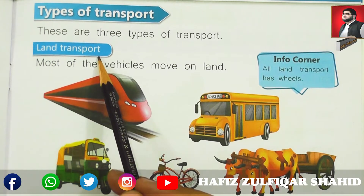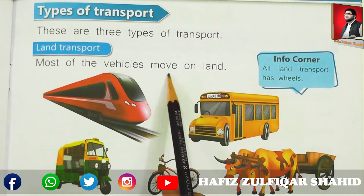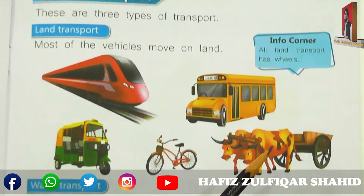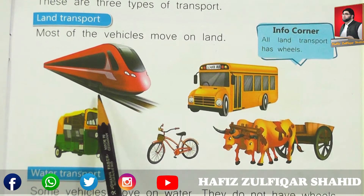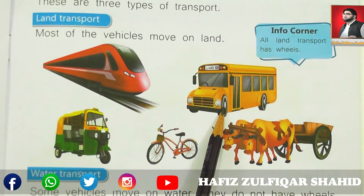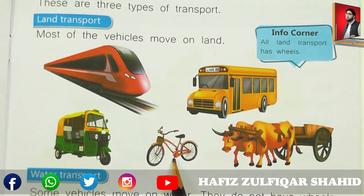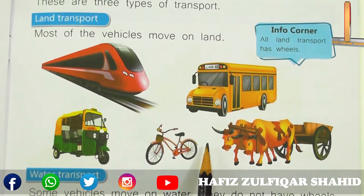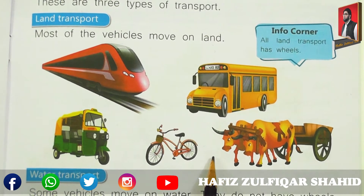Number one is Land Transport. Land Transport کا مطلب ہے کہ زمین پر چلنے والی گاڑیاں۔ Most of the vehicles move on land. بہت سی ایسی گاڑیاں ہیں جو زمین پر چلتی ہیں. Look at these pictures — train, bus, auto rickshaw, bicycle, and tip cart. یہ سب چیزیں زمین پر چلتی ہیں۔ انہیں زمین پر چلنے والی transport کہتے ہیں. So these are the land transports.